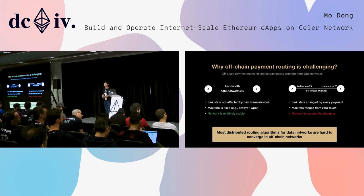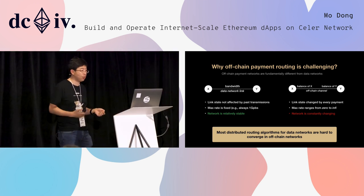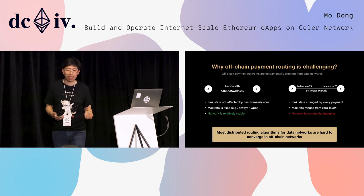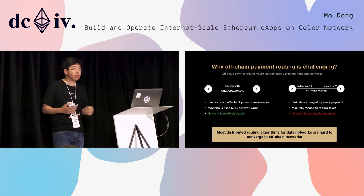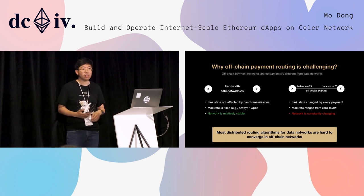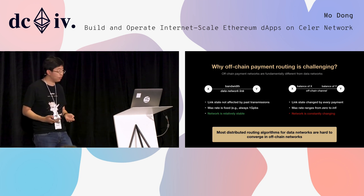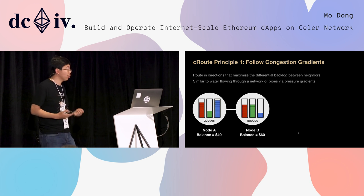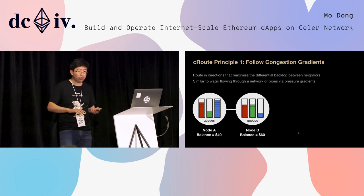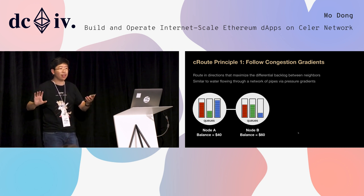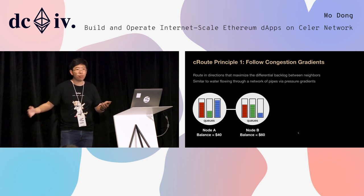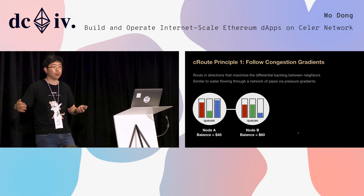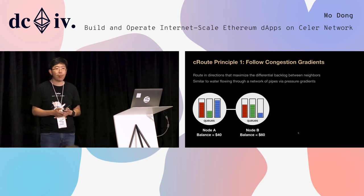But for a payment network, the capacity actually changes as you deliver payments through each direction. Using simple algorithms like shortest path routing can break down the channel very quickly. And when the entire network topology is constantly changing, there is no way a decentralized routing algorithm can actually work. What we proposed is called cRoute, and the principle of cRoute is to follow the congestion gradient — basically figure out when a channel is too imbalanced, and rather than following the shortest path, follow a longer path to maintain the overall balance of the network.